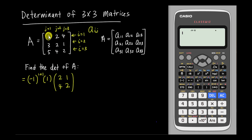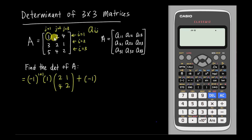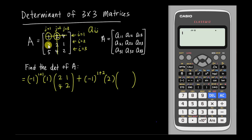For the second element, I add the cofactor of element 2. Its position is 1,2, so the power is 1+2. I copy the number 2, then multiply by its minor — canceling the first row and second column gives the minor [3, 5; 1, 2].